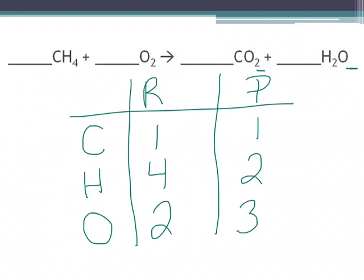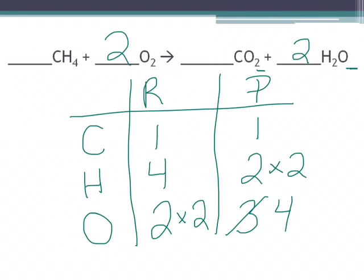Let's do the hydrogens first. We have four on the reactant side and two on the product side, so we're going to multiply that two by two. Placing it in front changes our number of oxygens — we now have four oxygens on our product side. So now we need to multiply our reactant side oxygens by two, which gets us our four, and that equation is balanced.